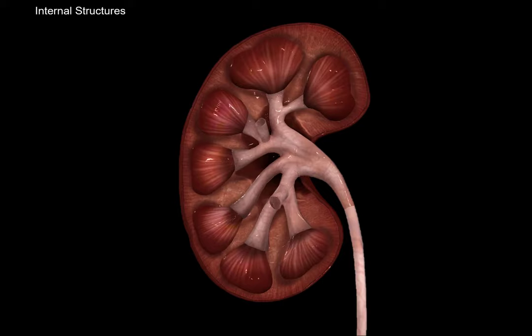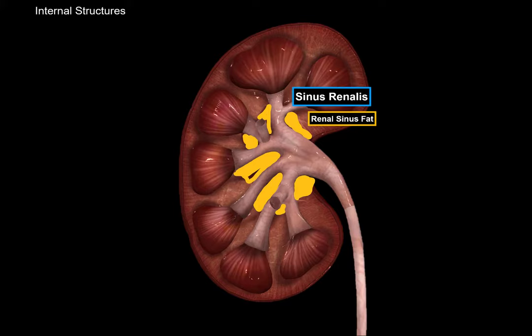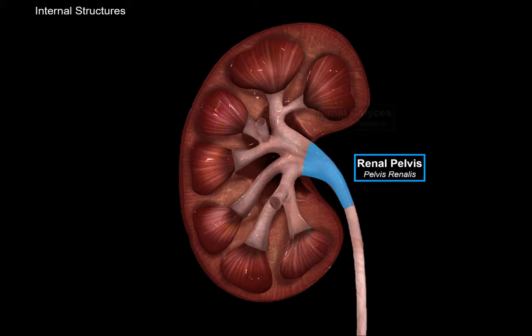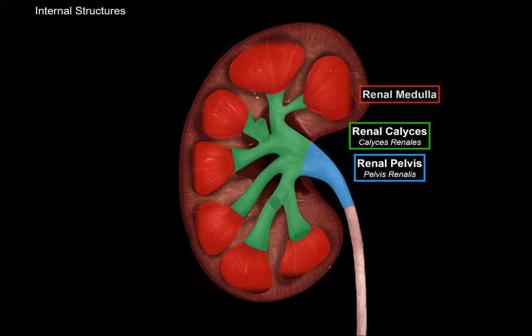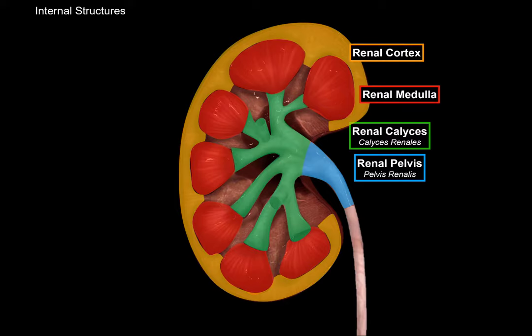Now let's open the kidneys up to cover the internal structures. The kidneys have a compartment within them called the sinus renalis, or the renal sinus, which is filled with fat called the renal sinus fat. Between the fat, you'll find the renal pelvis and the renal calyces, which lead the urine from the kidneys down to the ureter. The actual kidney tissue consists of the renal medulla and the renal cortex, with parts of the cortex also extending down between the medulla.